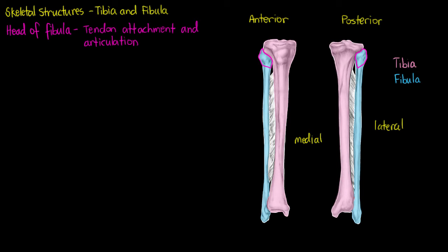The next structure we're going to have a look at is our lateral malleolus. We can think of it as a protuberance, not unlike the styloid processes that we see on our ulna and radius. It's going to be a point of the fibula that articulates with our tarsal bones, namely our talus.